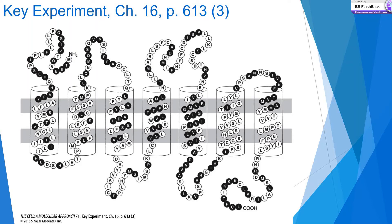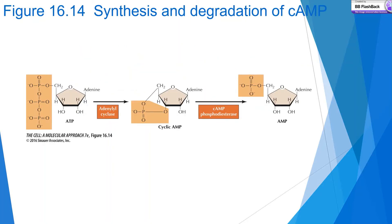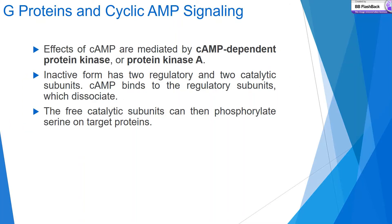Cyclic AMP as a second messenger was discovered in 1958 by Sutherland in studies of epinephrine signaling — the breakdown of glycogen to glucose in muscle cells. cAMP is formed from ATP by adenylyl cyclase and degraded to AMP by cAMP phosphodiesterase. As shown in the figure, ATP in the presence of adenylyl cyclase produces cyclic AMP, and cyclic AMP in the presence of cAMP phosphodiesterase is converted into AMP — adenosine monophosphate.